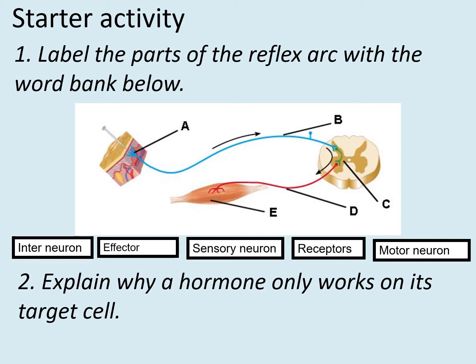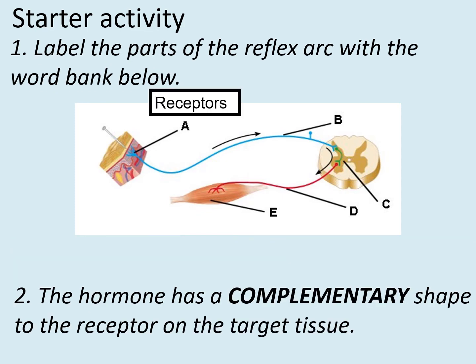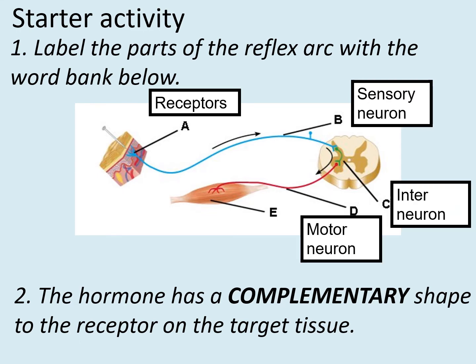The answers are that A would be your receptors, B would be your sensory neuron, C would be your interneuron, D would be your motor neuron and E would be your effector. The answer to the hormone question is that a hormone has a complementary shape to the receptor of the target tissue. If you managed to get that all correct, well done, you can move on. If you didn't then you'll need to go watch the other videos again.